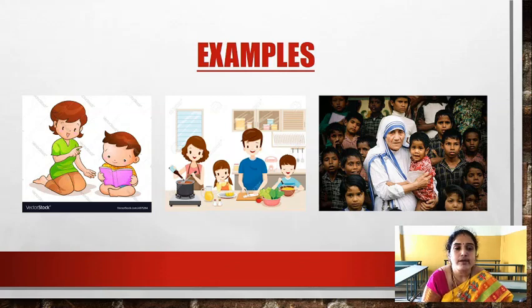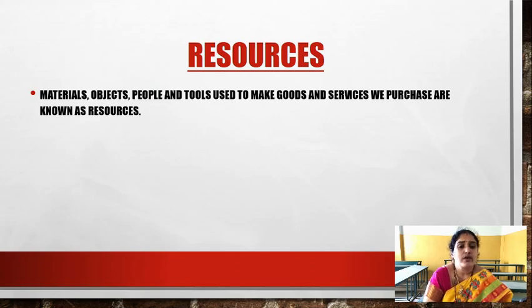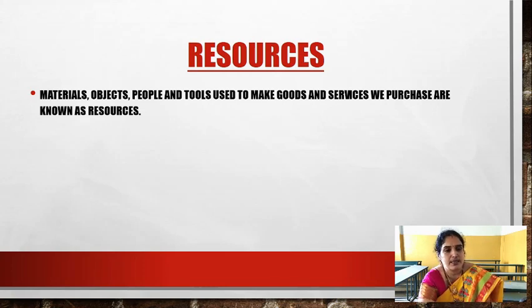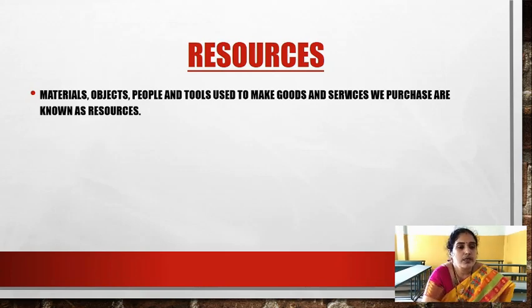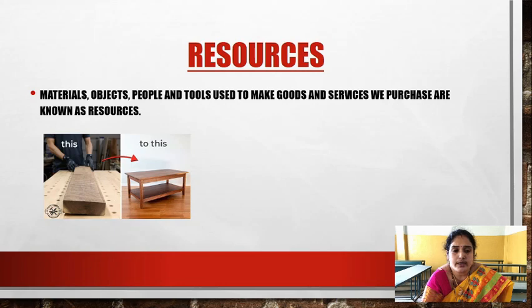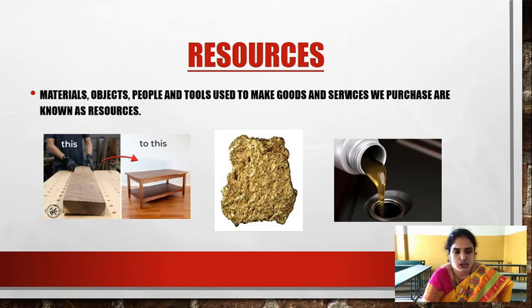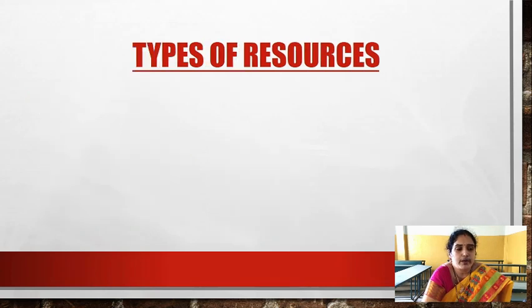Now we come to resources. Materials, objects, people, and tools used to make goods and services are known as resources. Whatever objects, raw materials, tools, labor, and people we use in order to produce goods and services are called resources. For example, from a log we can make a table, furniture, or cupboards. Gold is a natural resource used to make ornaments. Petroleum is also a natural resource used in vehicles to travel. There are three types of resources: natural resources, human resources, and capital resources.